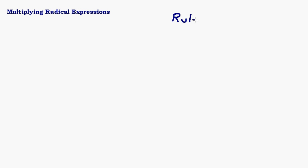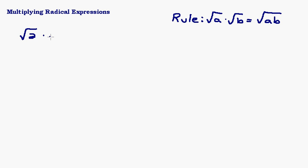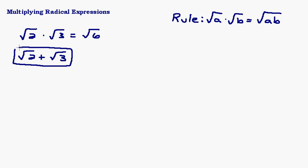In this video, we're going to look at multiplying radical expressions. We've done a little bit of this with basic monomial expressions using the rule: the square root of a times the square root of b equals the square root of ab. So if you have something simple like the square root of 2 times the square root of 3, that's simply the square root of 6. If I had square root of 2 plus square root of 3, those are not like terms, so I can't add them. But if it's multiplying, you can just multiply them together.